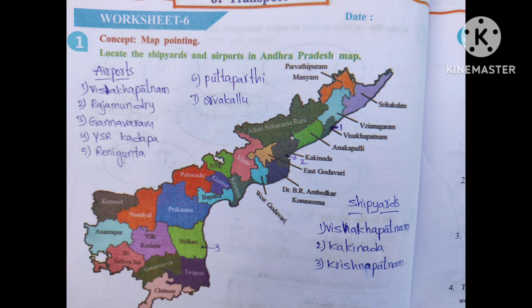Worksheet 6. Locate the Shipyards and Airports in the Andhra Pradesh map. Airports: Vishakapatnam, Rajamandri, Gannavaram, YSR Kadapa, Raini Gunta, Puttaparthi, Urvakallu. Shipyards: Vishakapatnam, Kaki Nada, Krishna Patnam.